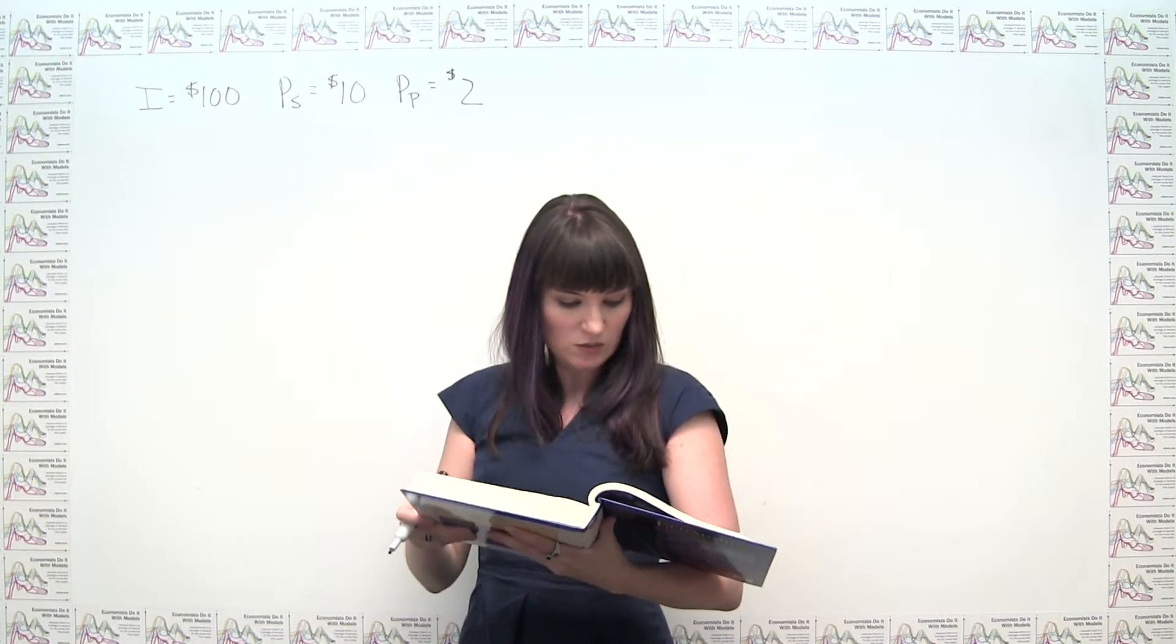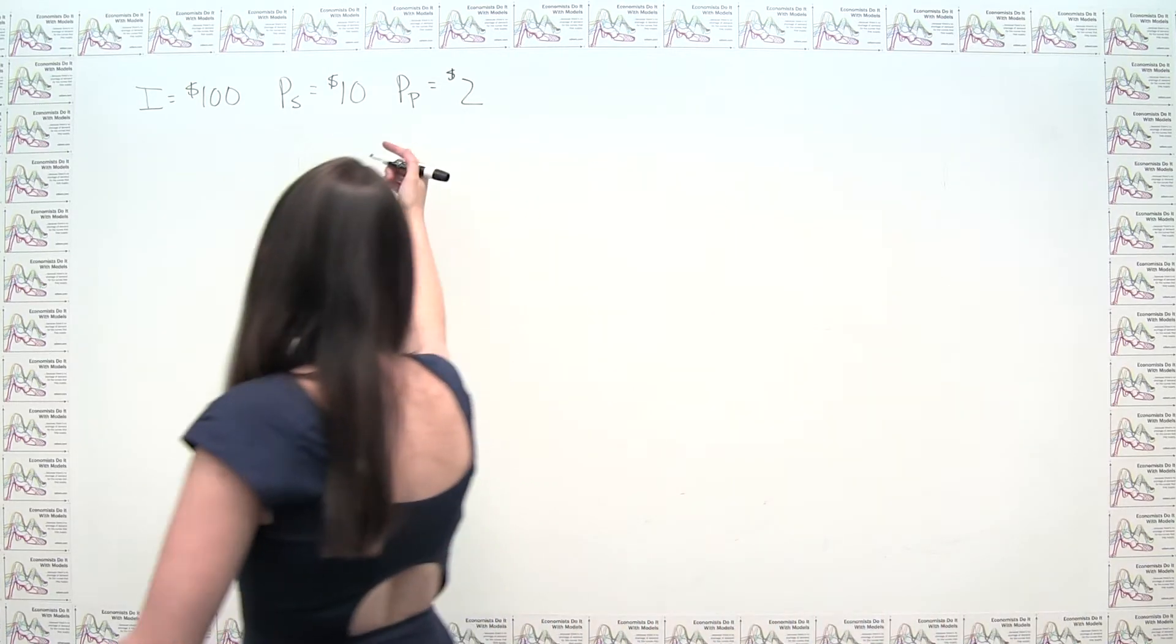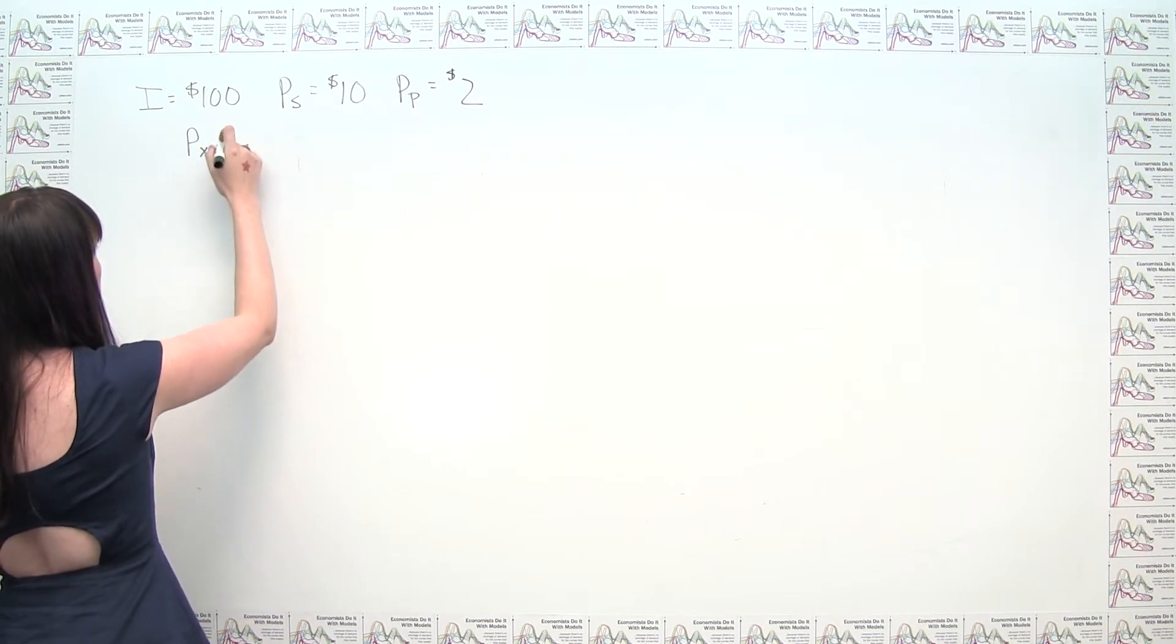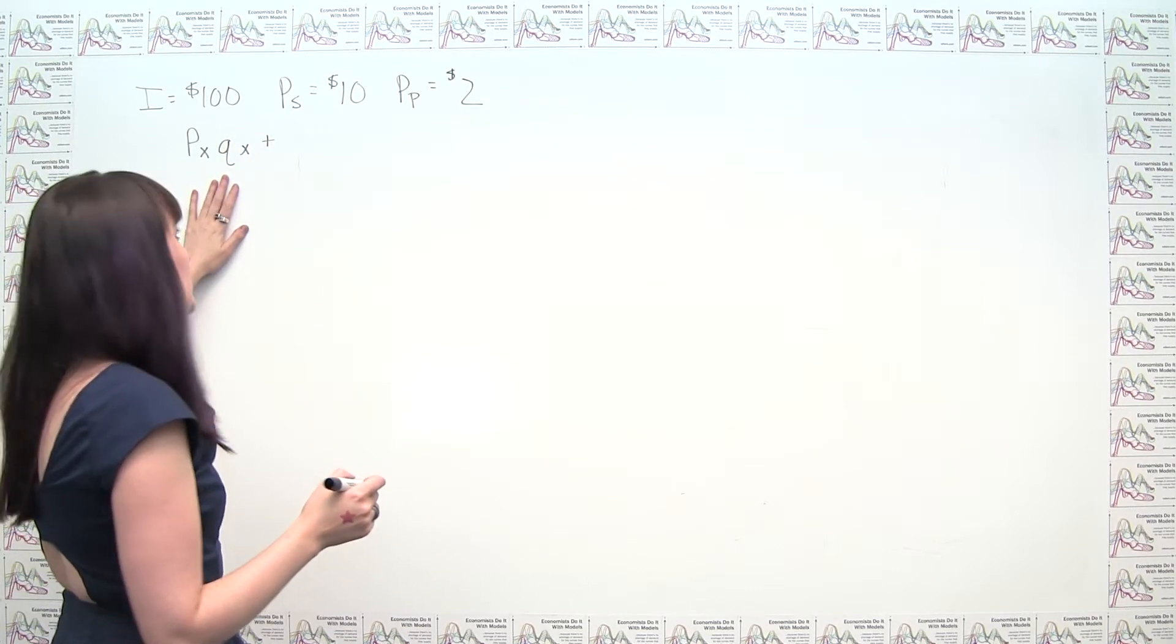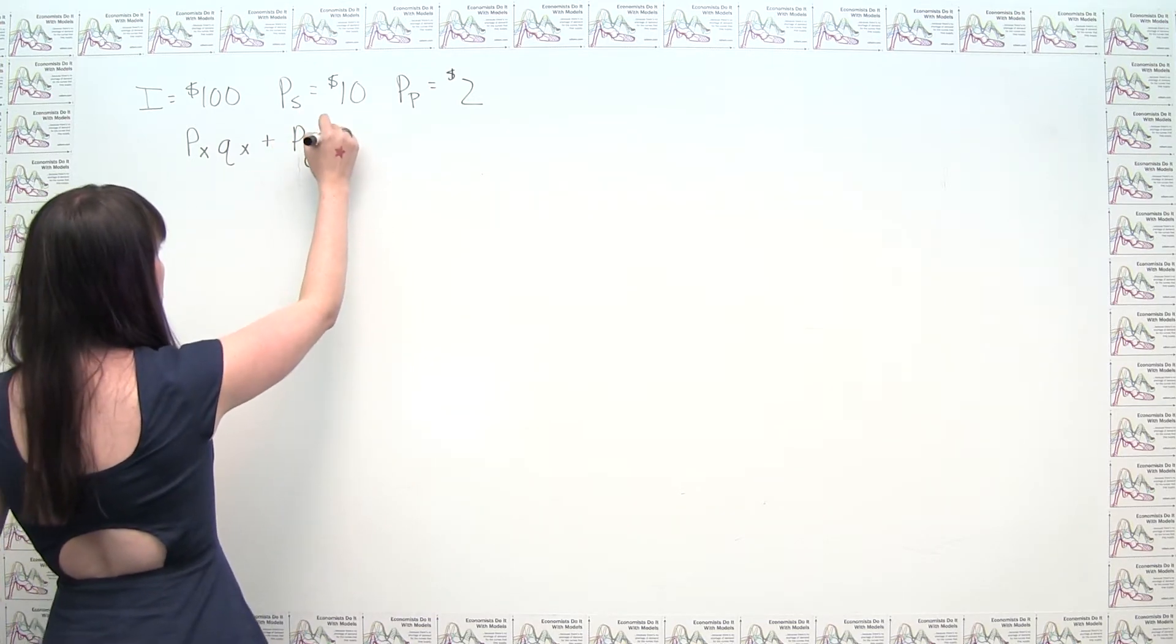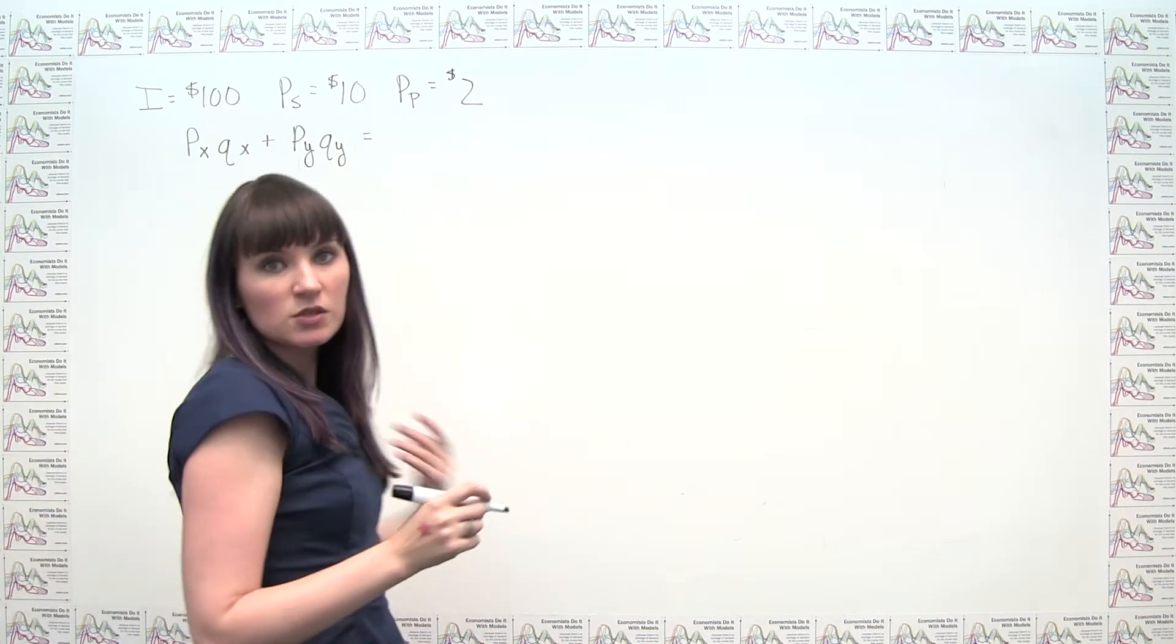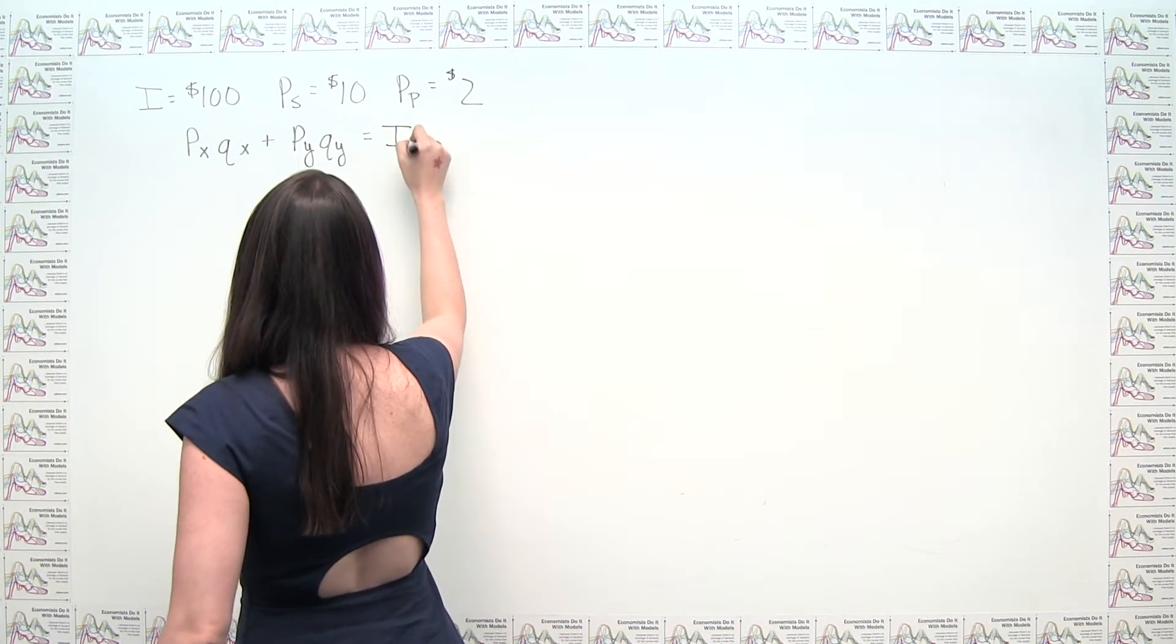So our first assignment is to just make our budget line. And we said before that our budget line just represents the price of the thing on the x-axis times the quantity consumed, that's your spending on the good on the x-axis, plus the price of the good on the y-axis times the quantity consumed of the good on the y-axis. The thing about the budget line is that it is assuming that you're spending all of your income, so these two things have to add to your income.